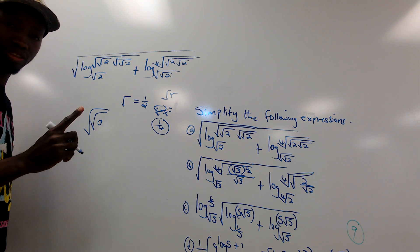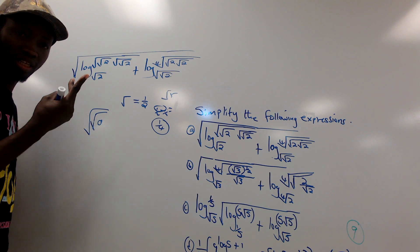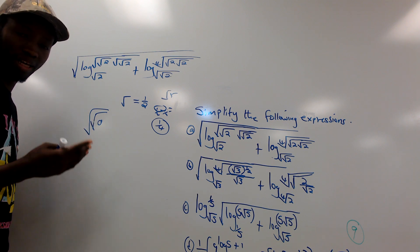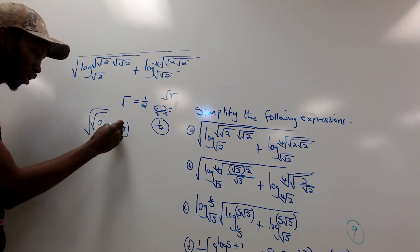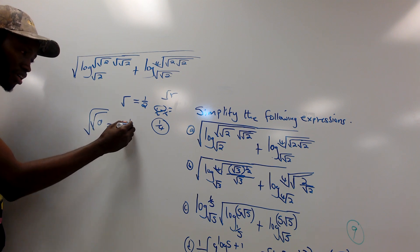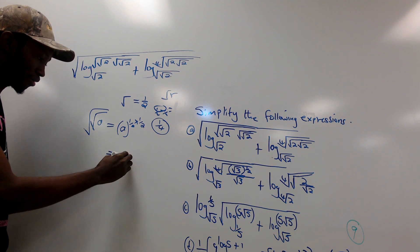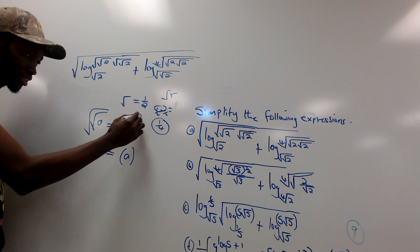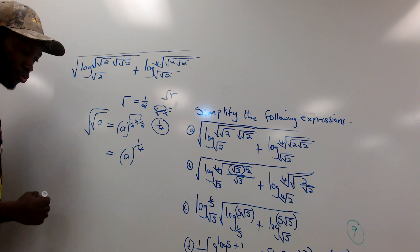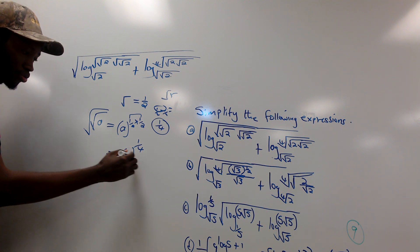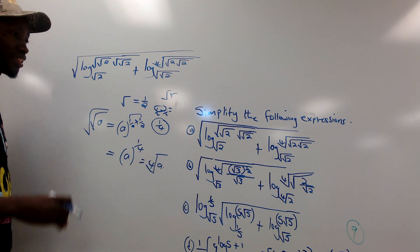To summarize: one square root gives power 1/2, two square roots give power 1/4, three square roots give power 1/8 — just multiply the denominators. So a under two square roots equals a raised to power 1/4, which is the fourth root of a.